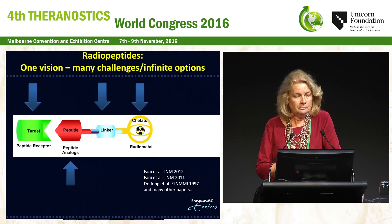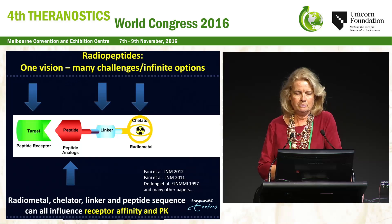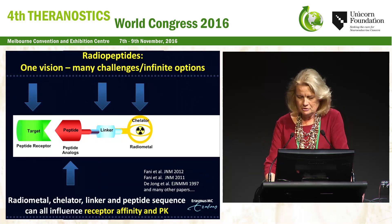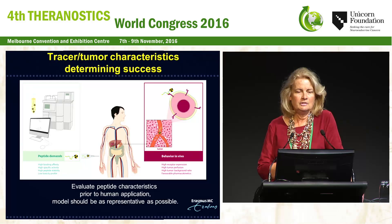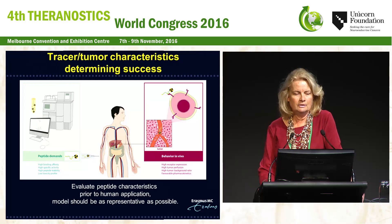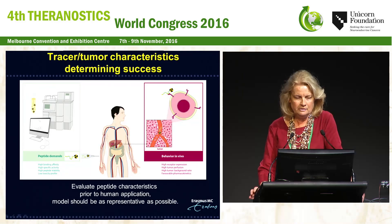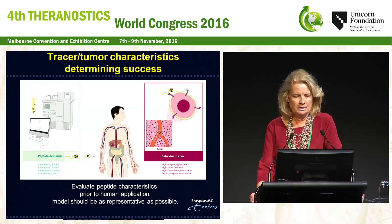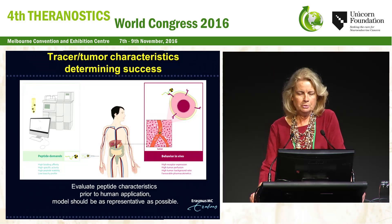We have to realize that not only the peptide sequence, but also the radiometal, the chelator, and the linker can all influence the receptor affinity and pharmacokinetics. So for each combination, we have to test if these tracers still adhere to the characteristics of the ideal tracer: high binding affinity, high specific activity, high peptide stability, and a low toxicity profile. This has to be evaluated prior to human application.